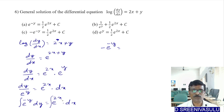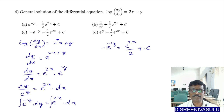The result is −e^(−y) = e^(2x)/2 + c. You may observe the answer: minus e to the power minus y.